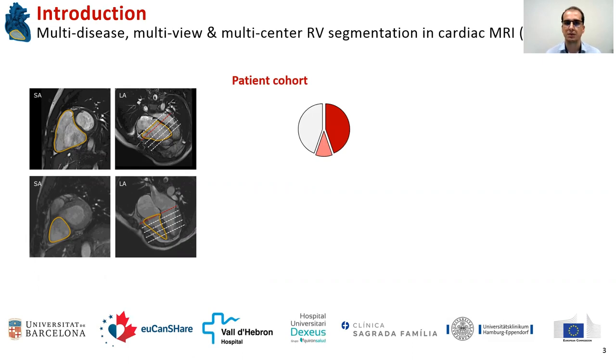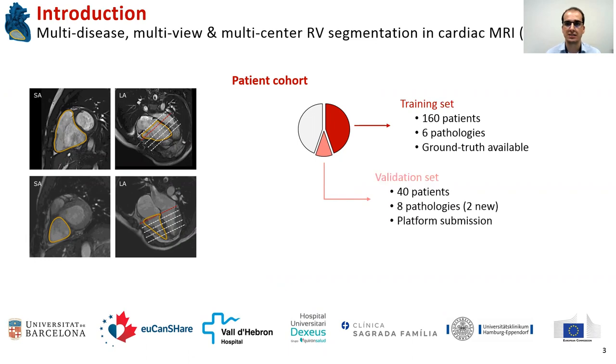have prepared and made available a cohort of 360 cases divided into three groups. The training set with 160 patients covering six pathologies and the ground truth made available for both images and both ventricles. A smaller validation set with eight pathologies, two of which not found within the training set and for which only the images are made available to the participants. And a test set with 160 patients in which the participants must submit both the code and training models for evaluation.